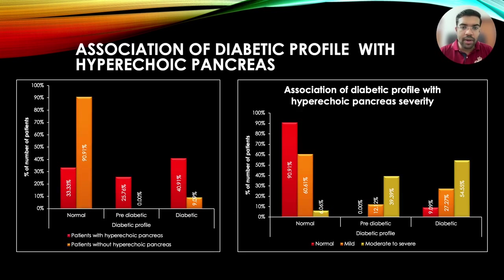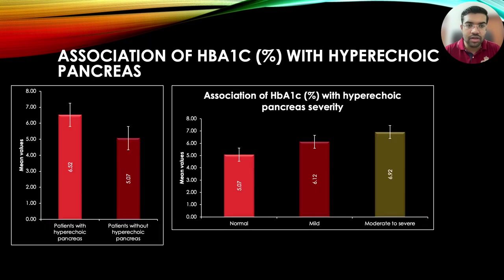Patients with hyperechoic pancreas had a significantly higher proportion of pre-diabetic and diabetic profiles compared to those without hyperechoic pancreas. Similarly, HbA1c values were found to be higher in patients with hyperechoic pancreas.